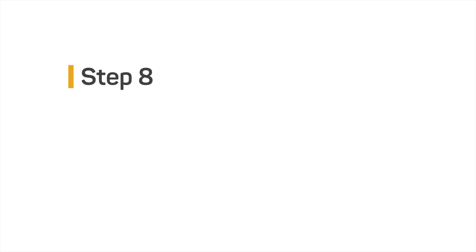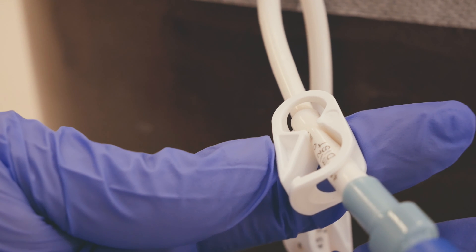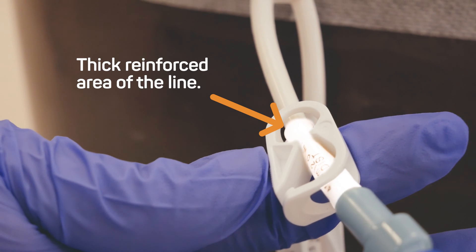Step eight: clamp the central line keeping your thumb on the plunger end of the syringe. Always place the central line clamp on the thick reinforced area of the line.